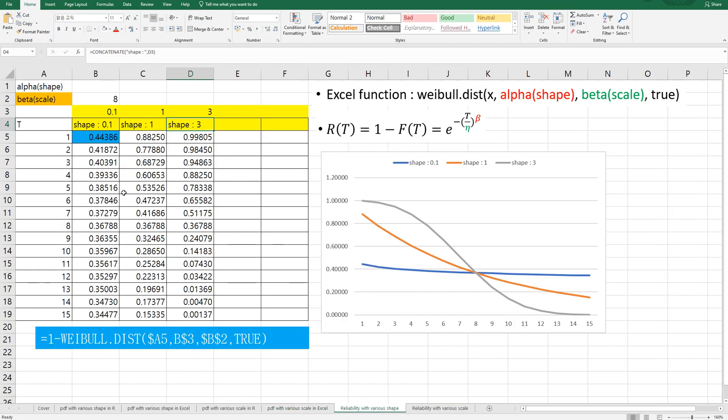So reliability, as I mentioned, is a survival function. As you can see, if you fix scale as 8 and change shape from 0.1 to 3, the graph shows like this. This is when shape value as 3, then it shows opposite of S-curve. So if you change shape as like 4 or 5, you can see steeper S-curve.